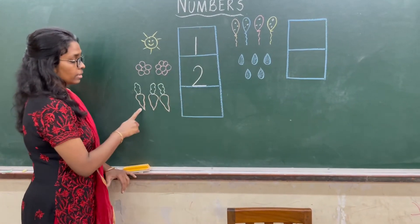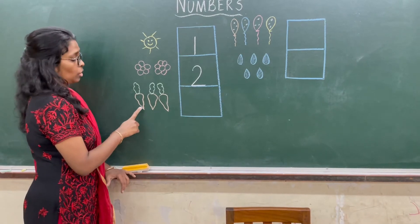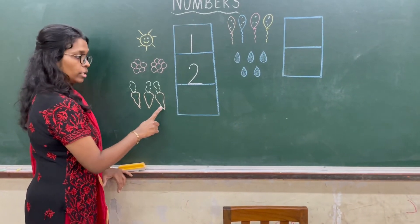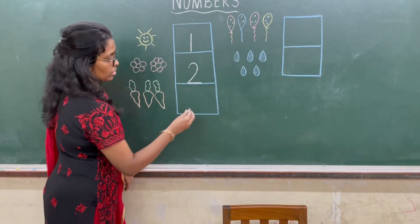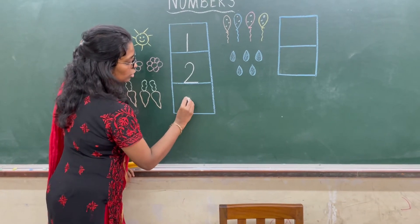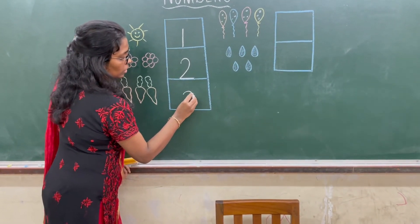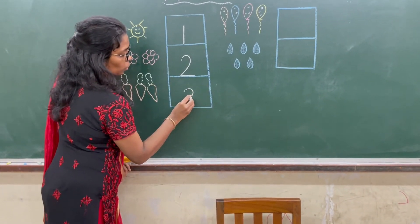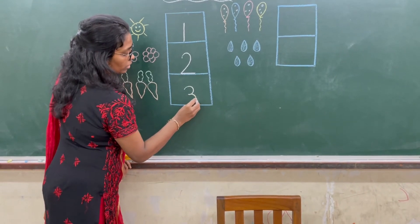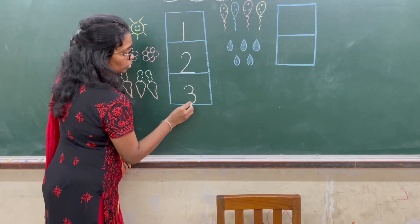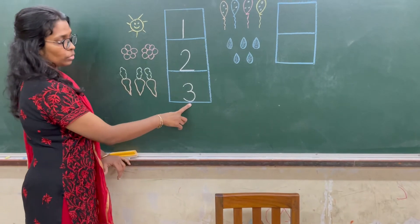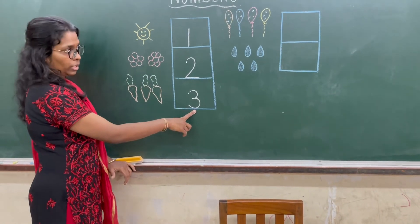Now next — carrots: 1, 2, 3 — 3 carrots. So we need 2 curves, 1 below the other. 1 curve and then 2 curves, touching the line down. That's number 3.